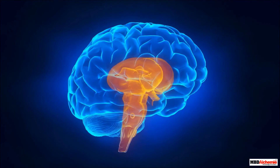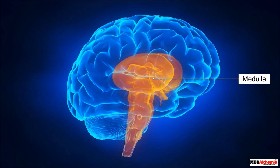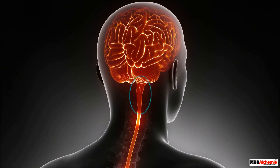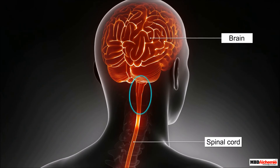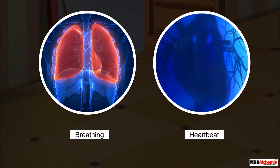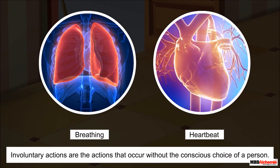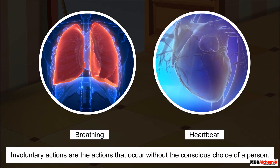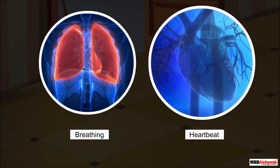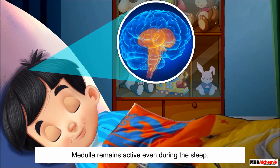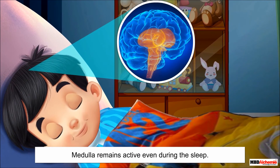The third part of the brain is the medulla. It is a stem-shaped structure present below the cerebellum. It connects the brain and the spinal cord. The medulla controls the involuntary actions of the body — actions that occur without the conscious choice of a person, such as heartbeat and breathing. This part of the brain is active even during sleep.